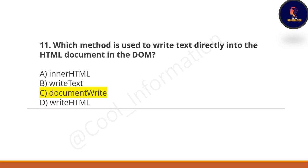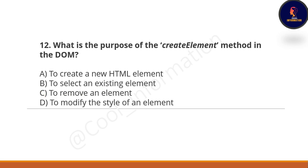15 questions will be asked from each unit, so do not take this lightly. These are the questions being discussed now, so just remember them. Next question: What is the purpose of the createElement method in the DOM? Option A: to create a new HTML element. Option B: to select an existing element. Option C: to remove an element. Option D: to modify the style of an element. The correct option is A.